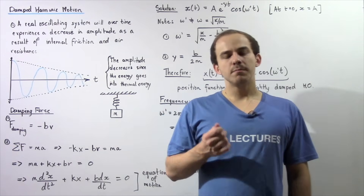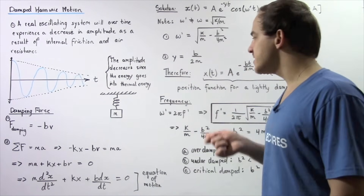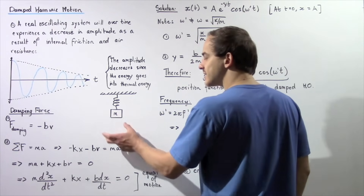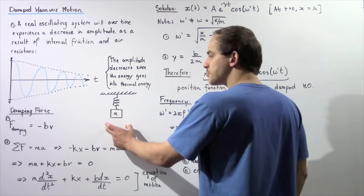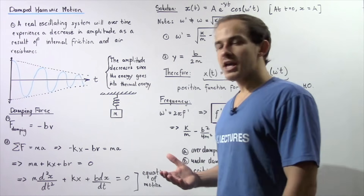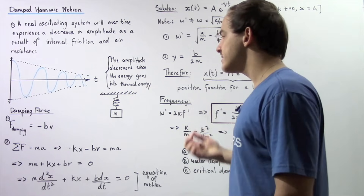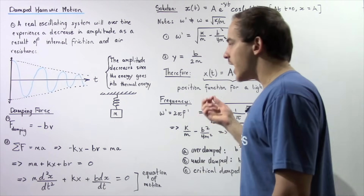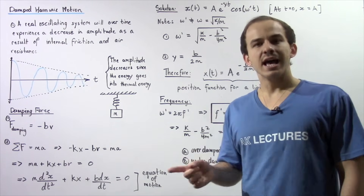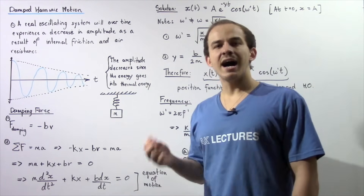We spoke about objects undergoing simple harmonic motion. So let's recall what simple harmonic motion is. If we have a spring and we take a mass, attach it to our spring, we stretch that spring and let go, the object will begin to oscillate back and forth and the oscillations will continue to be cyclical. The amplitude of our oscillation in simple harmonic motion remains constant, and that's because the total energy of our system remains constant.